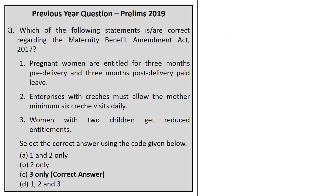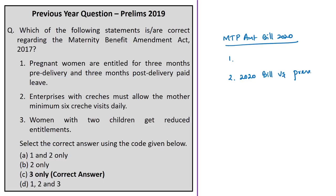These are some of the important points from the analysis of this news article. We saw the salient features of the proposed MTP Amendment Bill of 2020, what termination of pregnancy means, how the 2020 bill seeks to improve the present legislation, the important provisions on gestation limits in both the current act and the proposed amendment, and a few other salient features. Now let's move on to the analysis of the next news article.